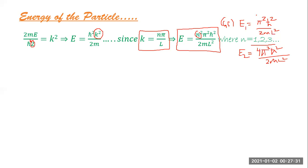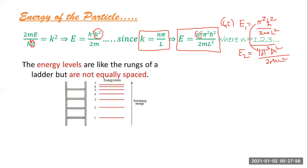The particle in a one-dimensional box cannot have any energy between these discrete levels — those energies are forbidden. The energy levels are like the rungs of a ladder, but they are not equally spaced. This is a huge departure from classical thinking, where a particle inside a box can have any energy whatsoever.